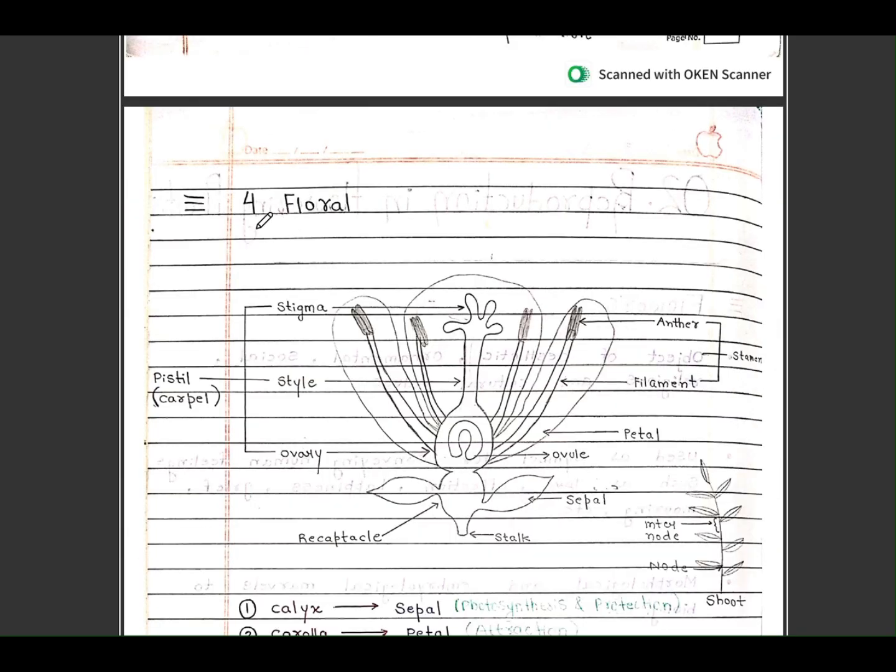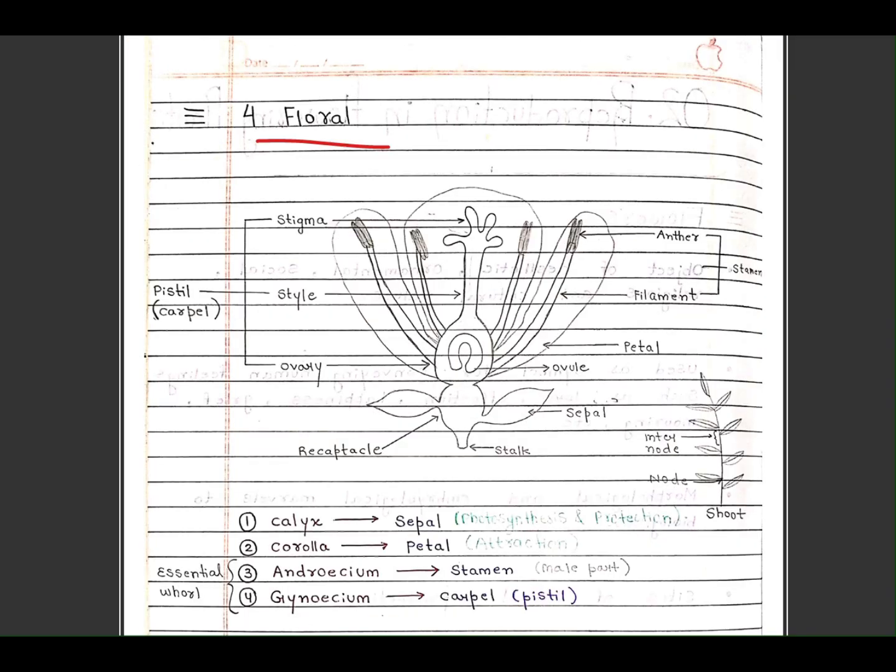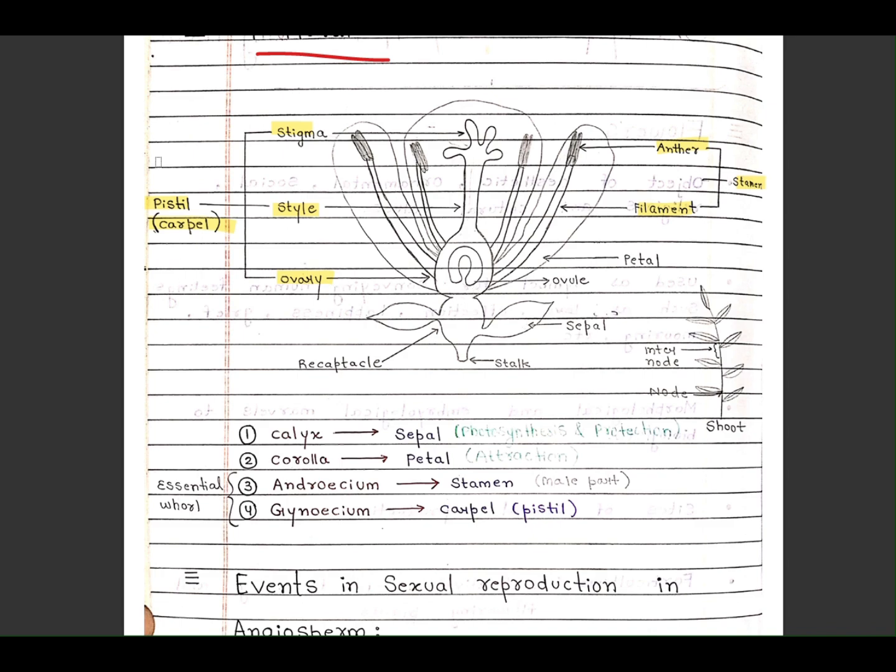Let's see the structure of flower. First is stigma, this is the stigma. It is the style, ovary. Together we call them pistil or carpel. This is the anther, it is the filament, and together we call it stamen. It is the petal, it is the ovule, it is the sepal, it is the stalk, it is the receptacle.